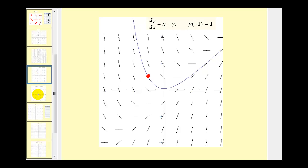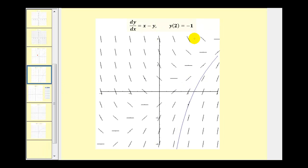For another example, if we were told that y of two equals negative one, where the function contains the point (2, -1), then this would be the graph of the particular solution graphed over the slope field.